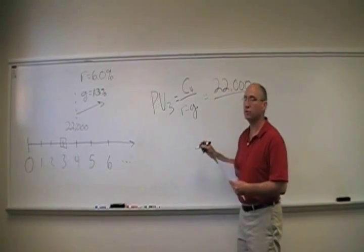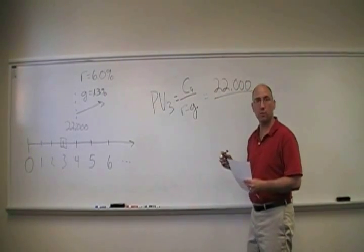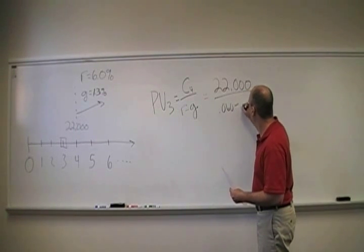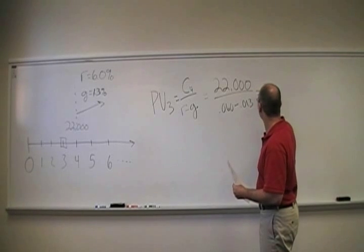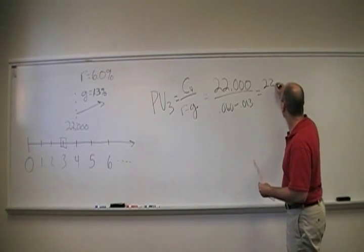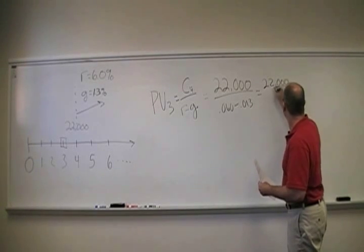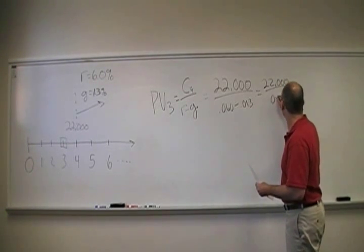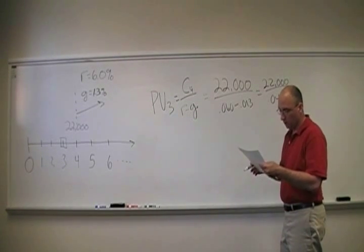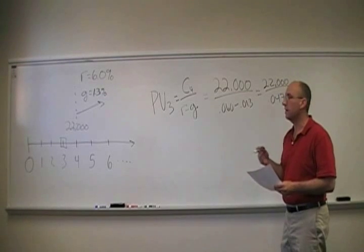R minus G is 6% minus 1.3%, 0.060 minus 0.013, so it's 22,000 over 0.047, and that is equal to $468,085.